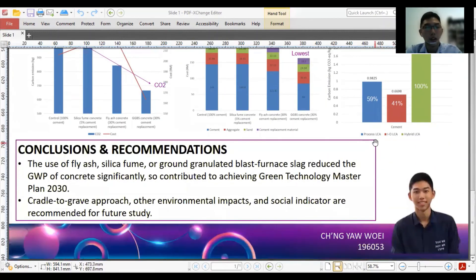In conclusion, the use of fly ash, silica-fume, or ground-granulated blast furnace slag reduced the global warming potential of concrete significantly, so contributed to achieving Green Technology Master Plan 2030. There are a few recommendations that can be improved for future study by utilizing cradle-to-grave approach, assessing other environmental impacts, such as ozone depletion, acidification, eutrophication, and lastly, social indicator can also be implemented in future study.